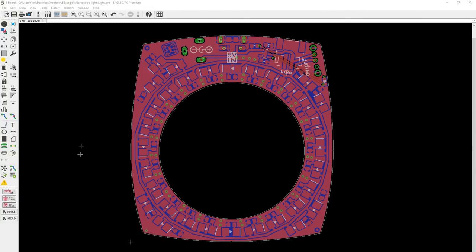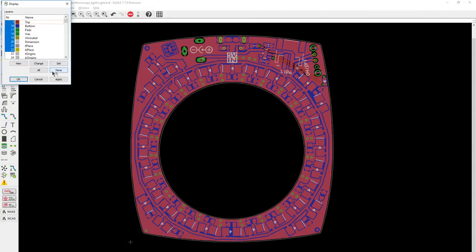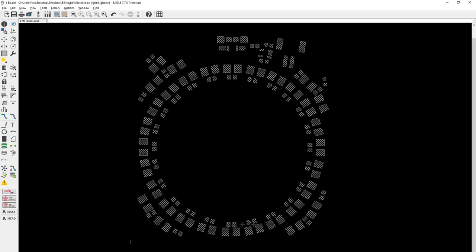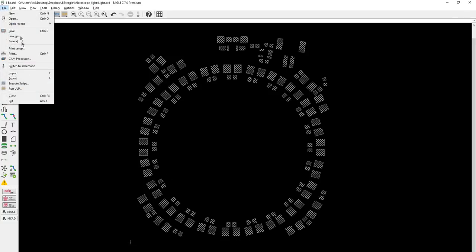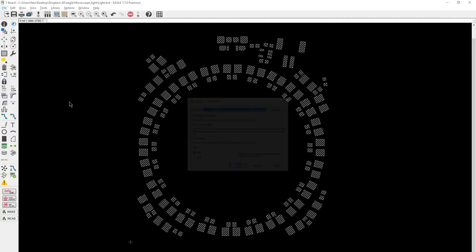To make the stencil I'm just going to go on Eagle and deselect all the layers and only select the top cream layer. And that's going to give me all the SMD pads for the components. Once I have that I will export this to DXF format.